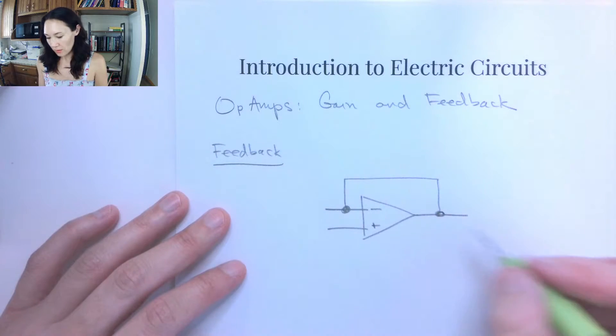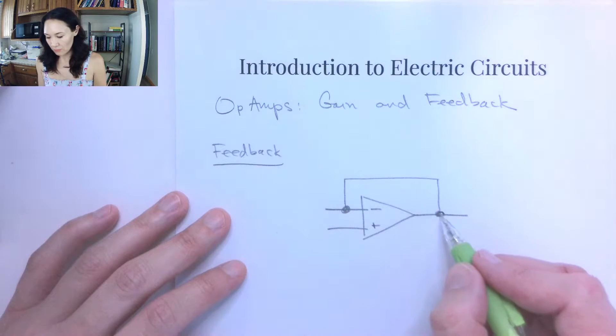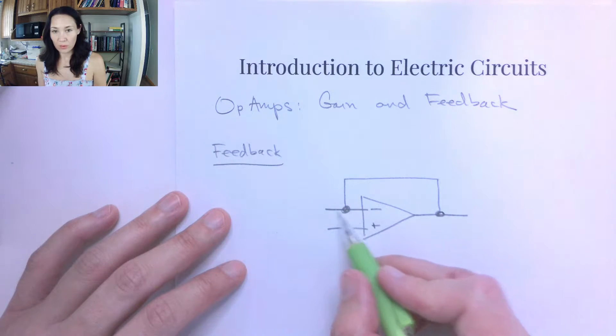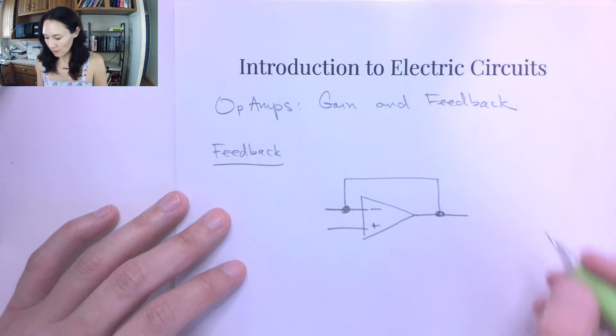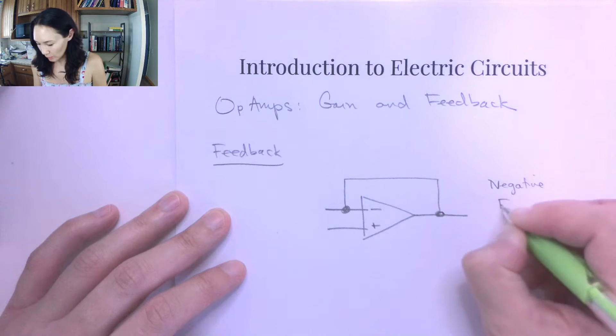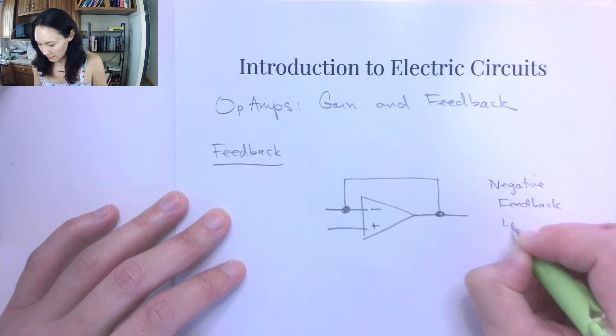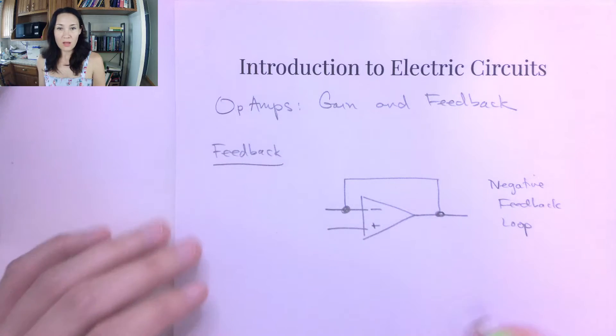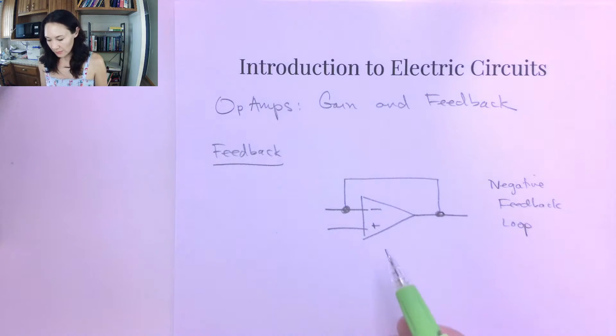Feedback is when we connect the output to one of the inputs. In this particular case, I have tied the output to the inverting input, the negative one. So this is called a negative feedback loop. And it turns out that almost all of the circuits with op amps are used with a negative feedback loop.